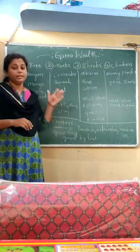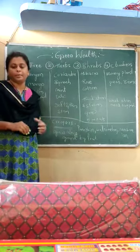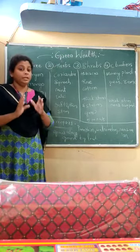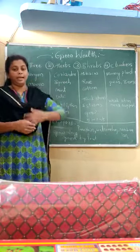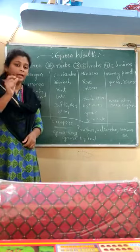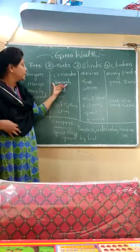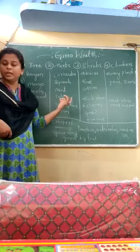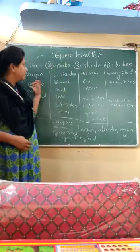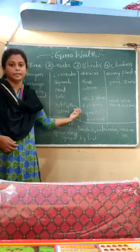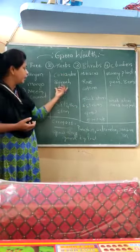The second type is herbs. Herbs are plants that have a very soft and thin stem. For example, the coriander plant we eat every day, spinach, mint, and tulsi. Compared to trees, which are very big and thick and grow to the highest point, herbs have a soft and thin stem and grow only up to some extent in height.